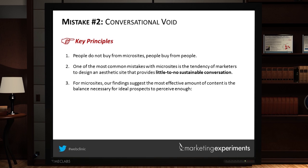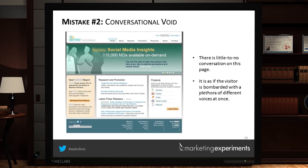Our meta-analysis of microsites revealed that the most effective amount of content is a balance — enough clarity on what you're offering and asking them to do, and enough for them to understand and believe it. Pages like Version A are like sending somebody to a buffet restaurant: they see a multitude of choices, then find out they're less than desirable, and walk away with a stomach ache. What's needed instead is a sit-down restaurant approach — a sequenced, vertically-designed conversation where information is arranged so visitors can understand what's going on.